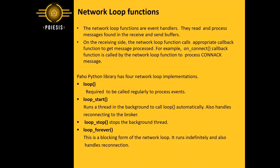The network loop functions are event handlers. They read and process messages found in the receive and send buffers. On the receiving side, the network loop function calls the appropriate callback function to get the message processed. For example, the onConnect callback function is called by the network loop function to process a connect message.